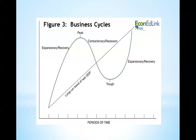As this continues, it is known as a recession. The fourth and final phase of the business cycle is the trough. This is the lowest point of real GDP in the cycle. If it is deep enough, it can be categorized as a depression.